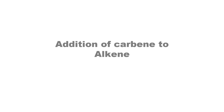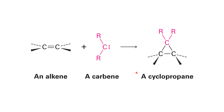Let's study about the addition of carbon to alkene. Usually carbon has four valence bonds, but when carbon has a lone pair electron, this kind of species is called a carbene. This lone pair electron can react with the alkene's pi electron and be inserted, forming a cyclopropane structure. This is the general structure of carbene addition to alkene.